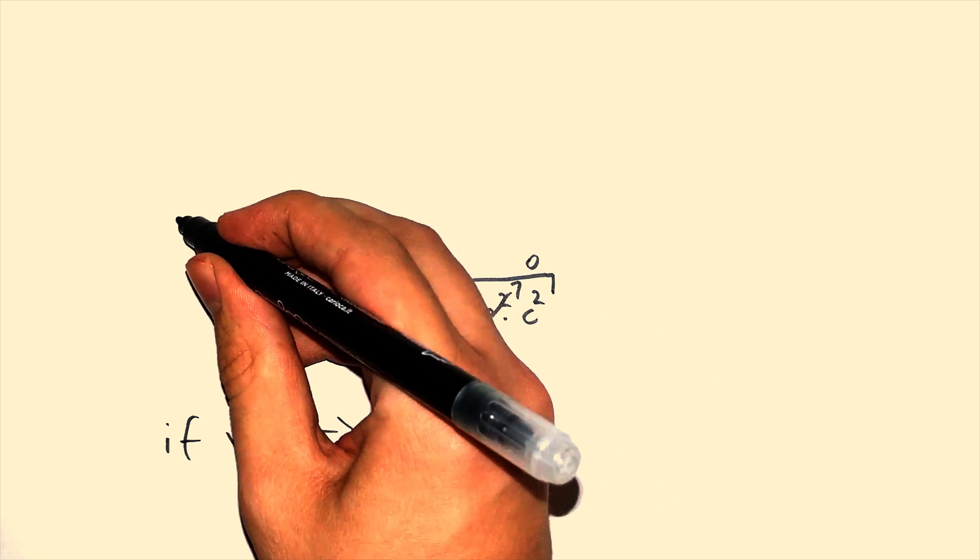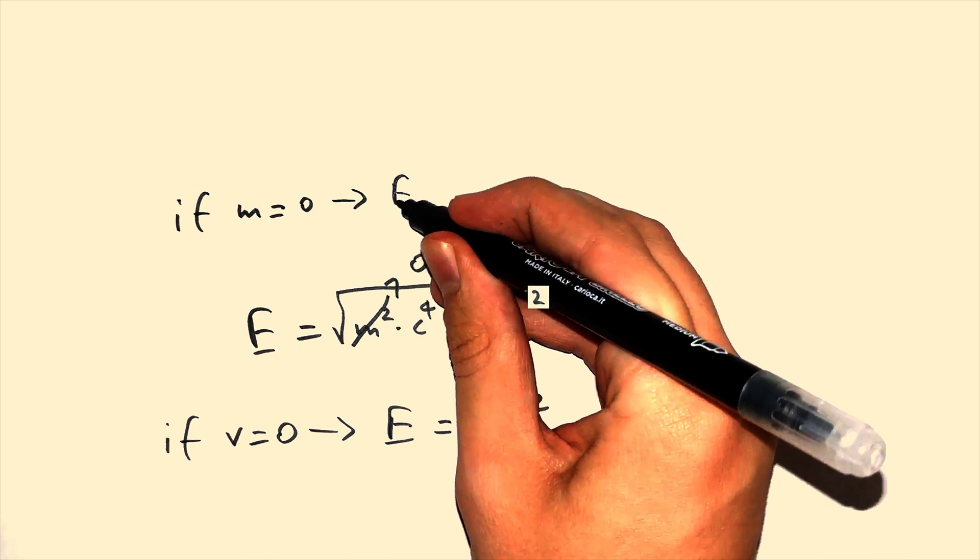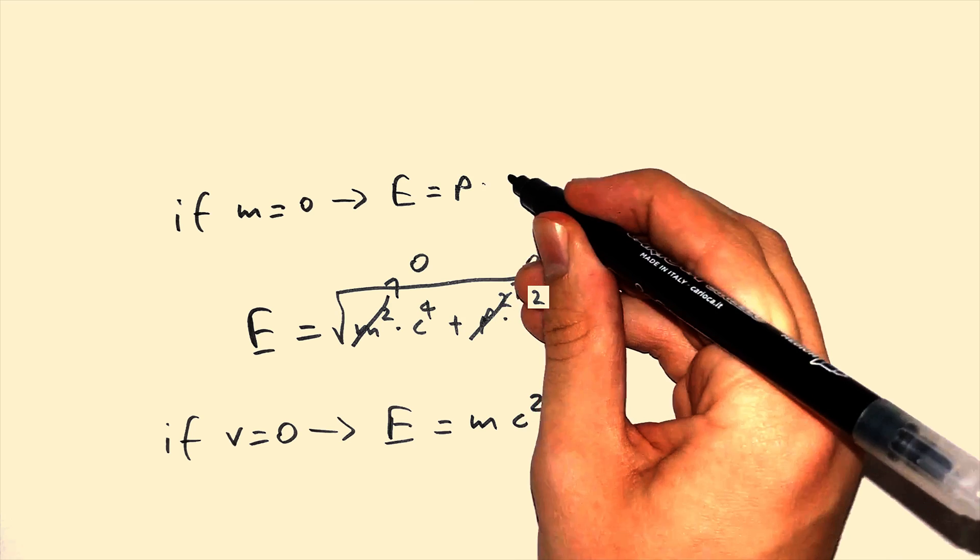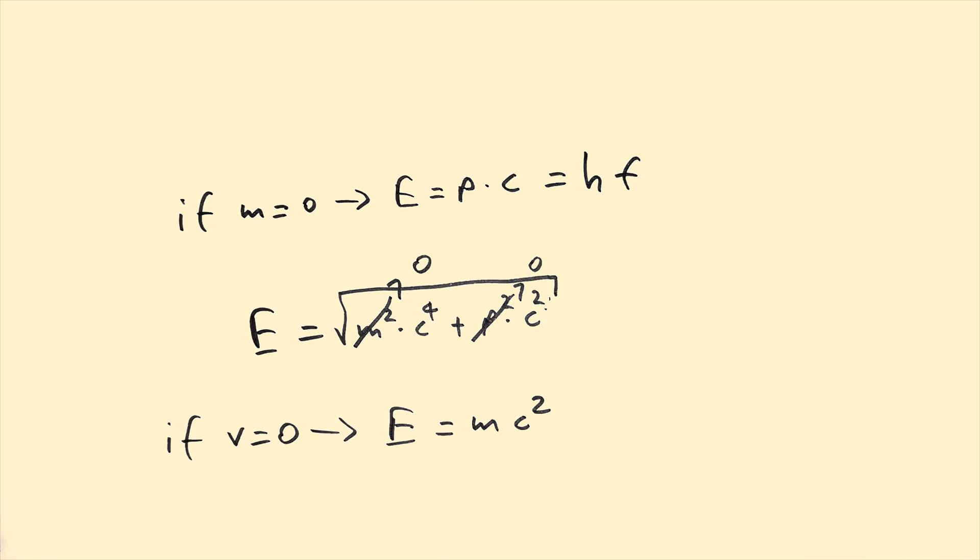But in the case of photons, it's the mass part of the equation which is 0, so the final result is energy is equal to momentum times the speed of light, which is equal to HF mentioned in the beginning of the video.